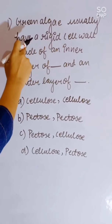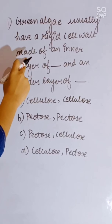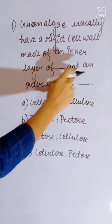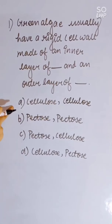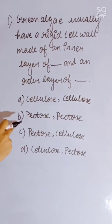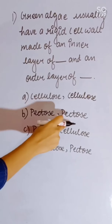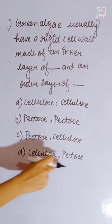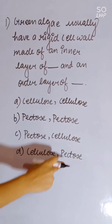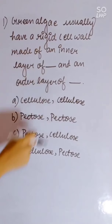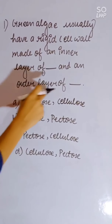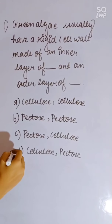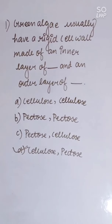Green algae usually have a rigid cell wall made of an inner layer of cellulose and an outer layer of pectose. Correct answer is D — cellulose (inner) and pectose (outer).